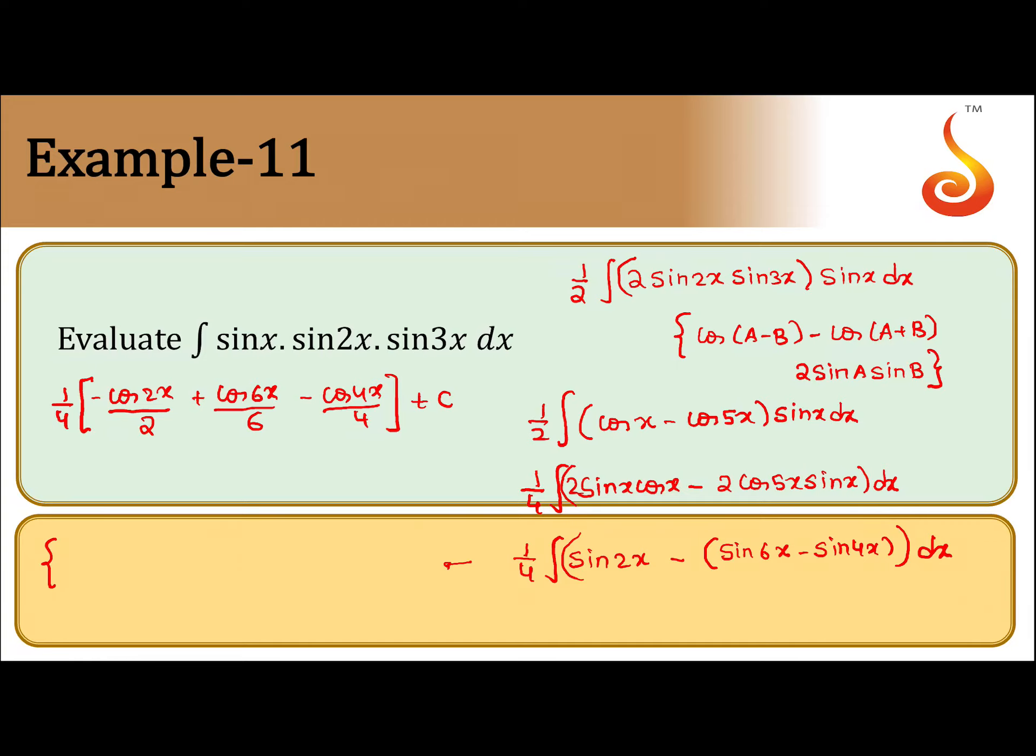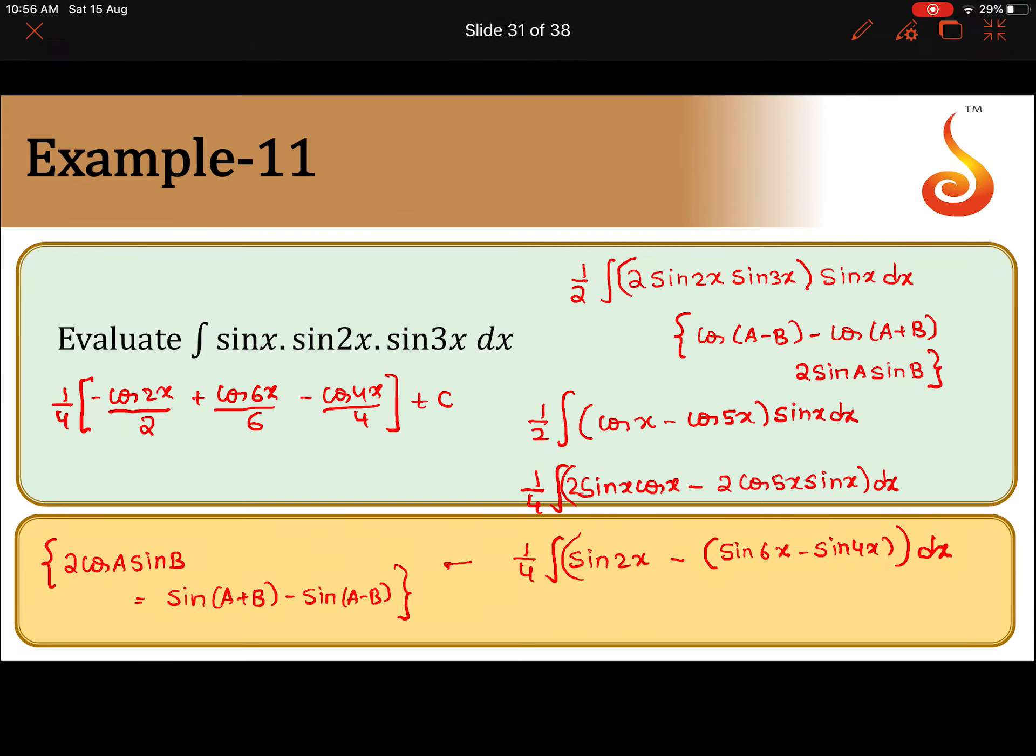What we used here is 2 cos A sin B is nothing but sin(A + B) minus sin(A - B). That is the formula used in the next case, to get sin 6x minus sin 4x.